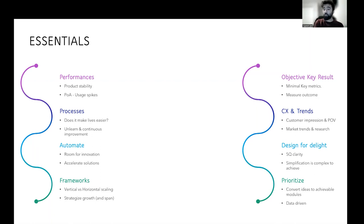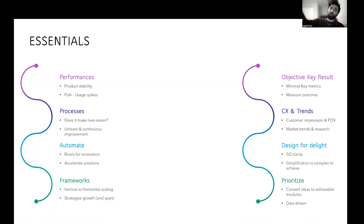You need to understand what your key metrics are — and to have a measurable outcome. When a product is being built, there are two things: the output, which is the product's behavior and how it should behave, and the outcome, which is how the product is solving its purpose — is it actually helping customers do the stuff they need to do? Those are the two aspects to consider when measuring outcomes and defining key metrics.